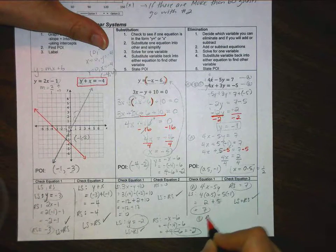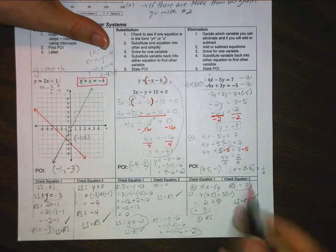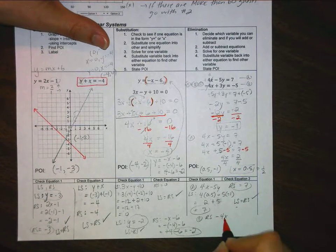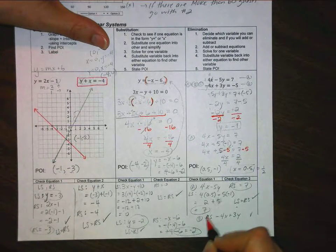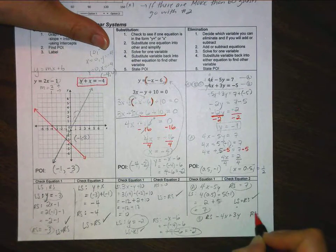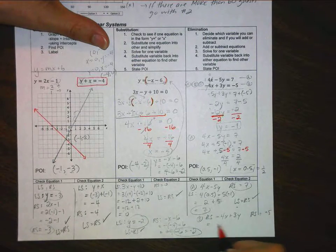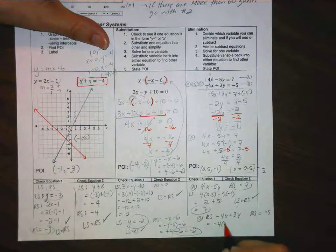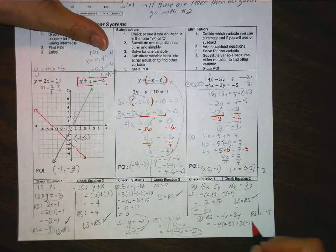The right side is negative 4x. Negative 4x plus 3y. Sorry, that's the left side. The right side is just going to be equal to negative 5.